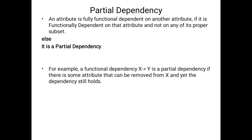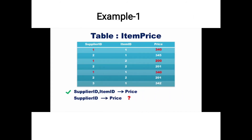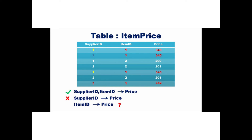Another example: supplier_id, item_id implies price. Price is fully functional dependent on the composite key. We check: supplier_id alone does not produce price, because one supplier_id has several price values. Item_id also does not produce price. Therefore, supplier_id, item_id implies price is a fully functional dependency.